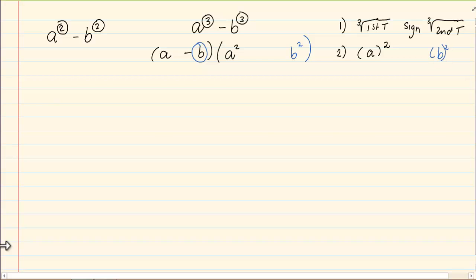Positive. Now notice my last term is going to be a positive. Why? Because if I take a negative b and I square it, negative times negative gives me a positive b squared.